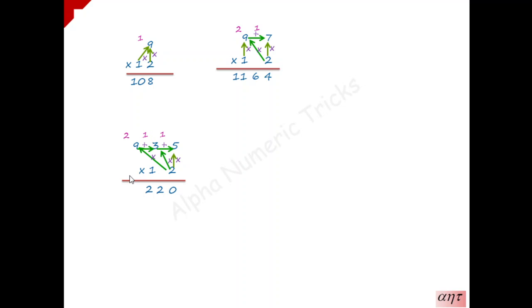So 18 plus 3 is 21, and 21 plus 1 carry forward is 22 — 2 is written, 2 is carry forward. Don't forget to multiply 1 with the last number in the multiplicand for all problems. So 1 into 9 is 9, 9 plus 2 is 11 — write it here, which is our final answer. Very simple and easy.